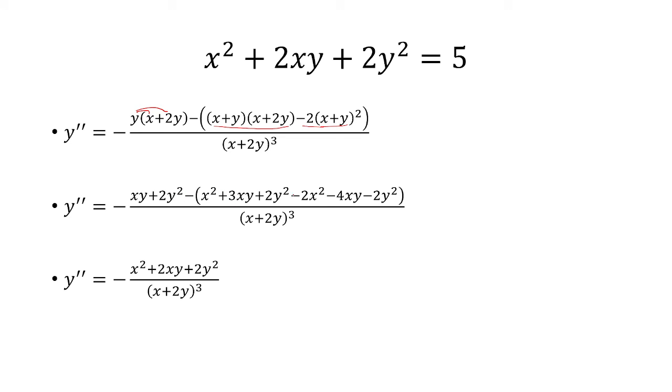Finally I simplified. I saw a lot of things canceling. So we can see 2y squared minus 2y squared. x squared minus 2x squared is negative x squared. But then you have a minus sign, that's going to give us positive x squared. Then you have 3xy minus 4xy. That's negative xy. And then you do the opposite of that as positive xy. And then plus another positive xy. That's 2xy. And that leaves us with 2y squared. And don't forget you still have the negative in front. So this is the second derivative. And notice it only depends on what x and y are. So you plug in x equals 1 and y equals 1, and get that the second derivative is negative 5 over 27.